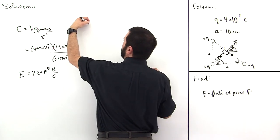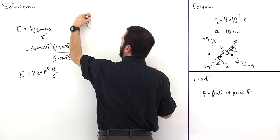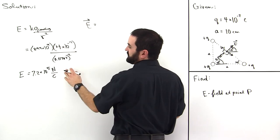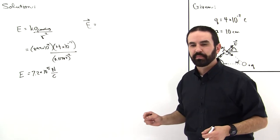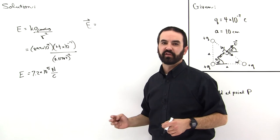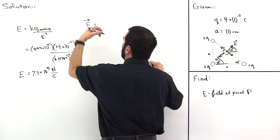So we can say the E field is a vector equal to this number times the cosine of 45 degrees x hat plus this number times the sine of 45 degrees y hat to get the components.